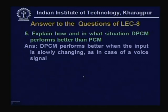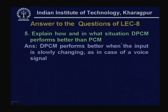Fifth question: In what situation does DPCM (Differential PCM) perform better than PCM? DPCM performs better when the input is slowly changing, as in the case of voice signals. When the signal is slowly changing, differential PCM requires very few bits, and delta modulation is the extreme case requiring only one bit. However, if the signal is not slowly changing, DPCM cannot be used. DPCM has better performance than PCM only when the signal is slowly changing.